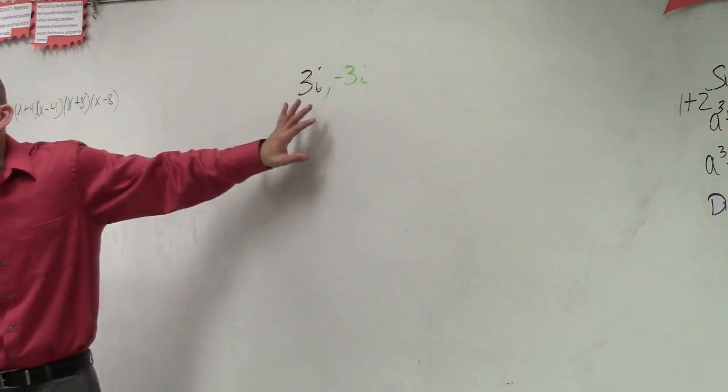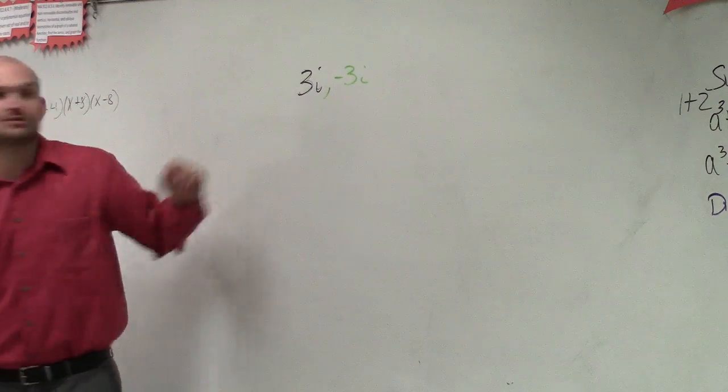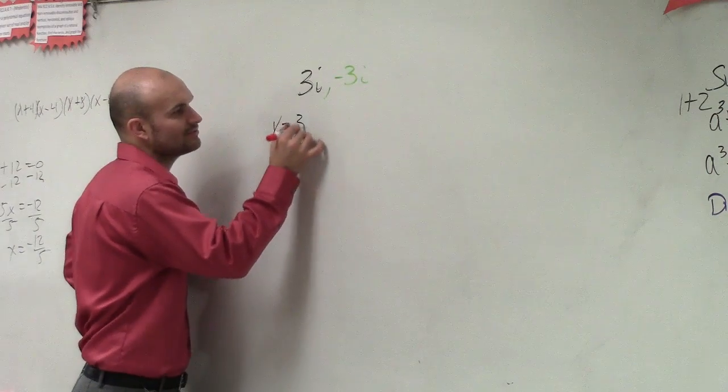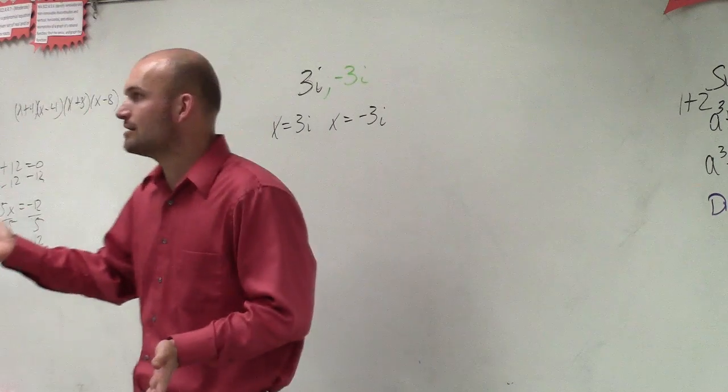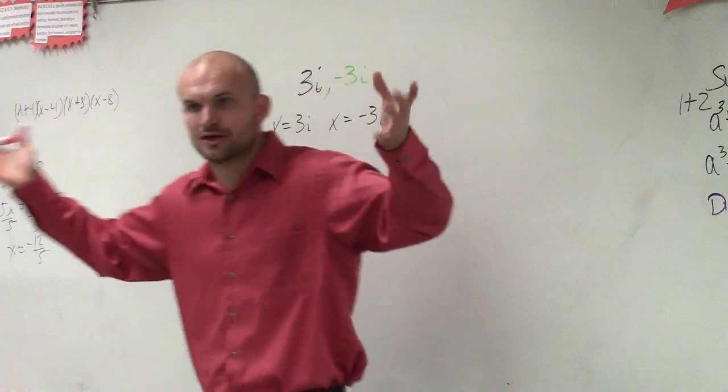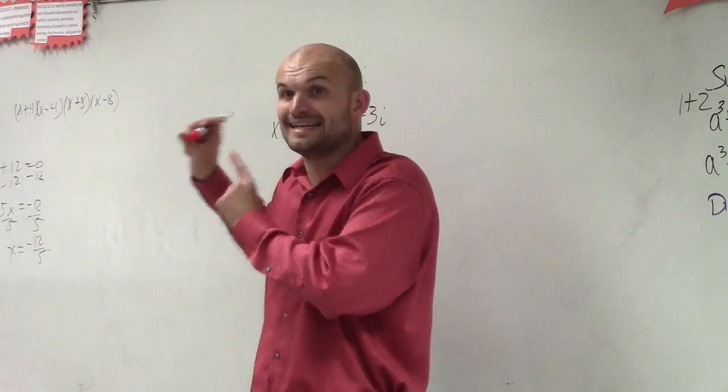What that means is for each one of these zeros, my x value is equal to that value. So you can say x equals 3i, and x equals negative 3i, right? Because isn't that what we did when we had an equation? Our polynomial or whatever, it said x and this, and we wanted to find the values of x when it equaled zero.